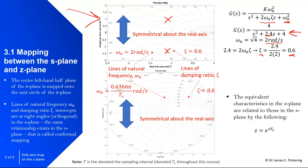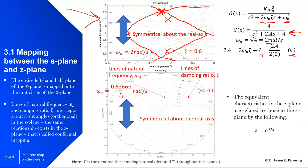For this particular system, the natural frequency is 2 radians per second and the damping ratio is 0.6. Because the S-plane is symmetrical about the real axis, we get a pair of complex conjugate poles — one above and one below the real axis, both located on the line of damping ratio 0.6 and natural frequency 2.